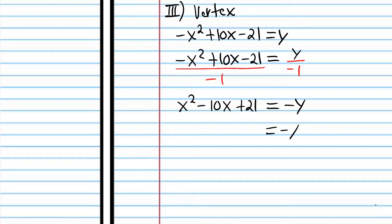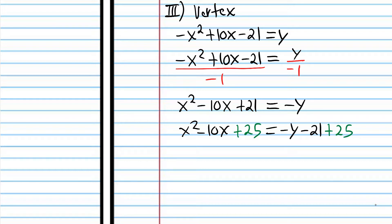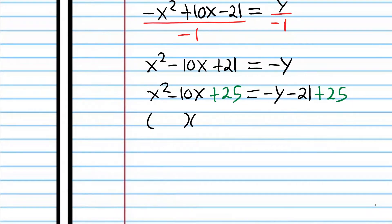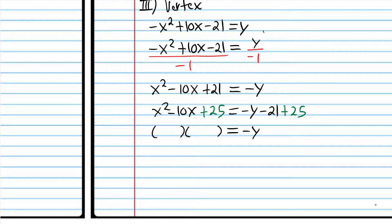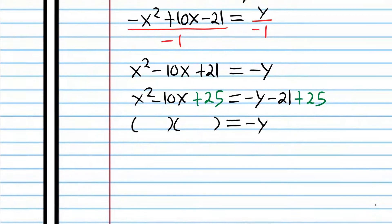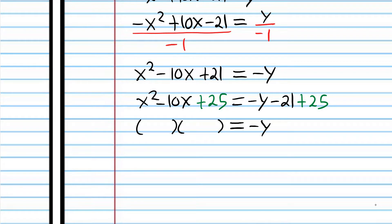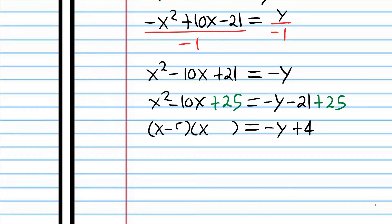What two numbers multiply to 25 and add up to negative 10? That's negative 5 and negative 5 — a perfect square, so we write it in square notation. Now we're going to subtract 4 from both sides. Then we can divide both sides by negative 1 — actually, I'll just multiply both sides by negative 1 to isolate y. Using the distribution property: negative 1 times x minus 5 squared gives us negative x minus 5 squared, and negative 1 times negative 4 is positive 4. We're now in vertex form.